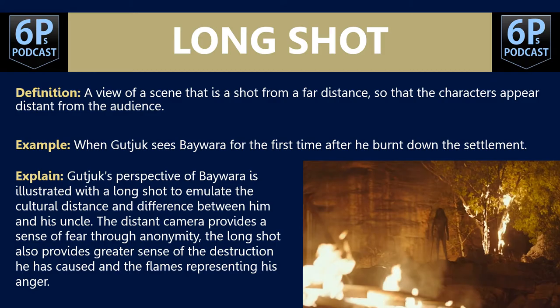From a close-up to a long shot — this is obviously a view shot from a far distance, so the characters appear distant from the audience, or they're pictured against the setting, landscape or backdrop. The example here is when Guchuk sees Baywater for the first time after he burnt down the station. Johnson uses a long shot to emulate the cultural distance and difference between Guchuk and his uncle. The distant camera provides a sense of fear through anonymity, and the long shot also provides a greater sense of the destruction caused — the flames representing Baywater's anger.